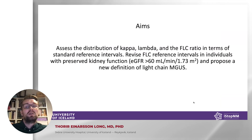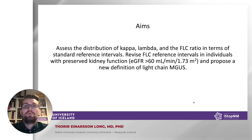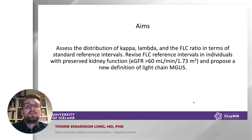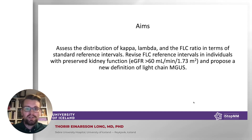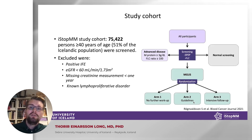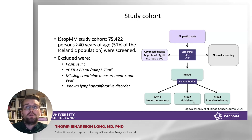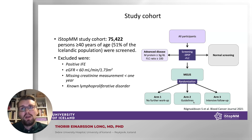The aims of this study were therefore to assess the distribution of kappa, lambda, and the FLC ratio in terms of the standard reference intervals; revise the FLC reference intervals for individuals with preserved kidney function or eGFR above 60; and based on these and previous findings, to propose a new definition of light chain MGUS. To do this, we used the ISTOP-MM study cohort of over 75,400 persons over the age of 40 who have been screened for MGUS.